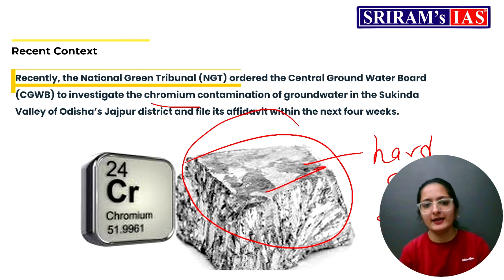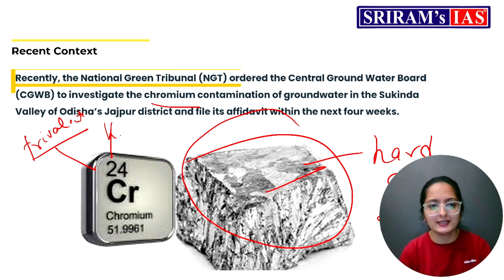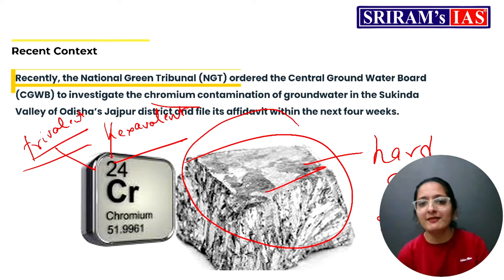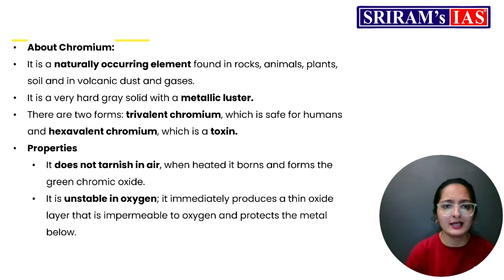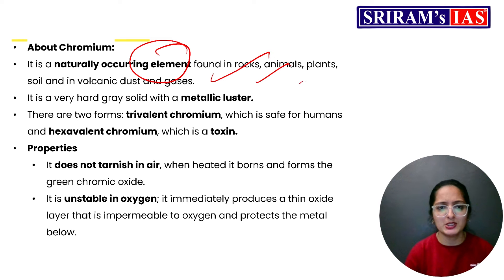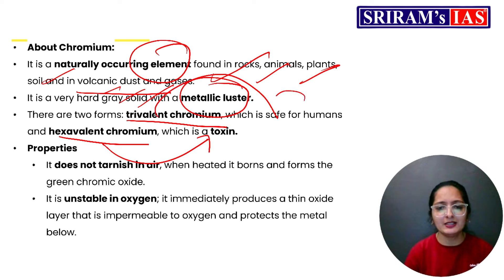Chromium has two forms: trivalent and hexavalent. Trivalent chromium is safe for humans, but hexavalent chromium is toxic to us. So it is a naturally occurring element found in rocks, animals, plants, soil, and volcanic dust — hard, grey, and solid with a metallic luster. The trivalent form is safe and the hexavalent form is the toxic one.